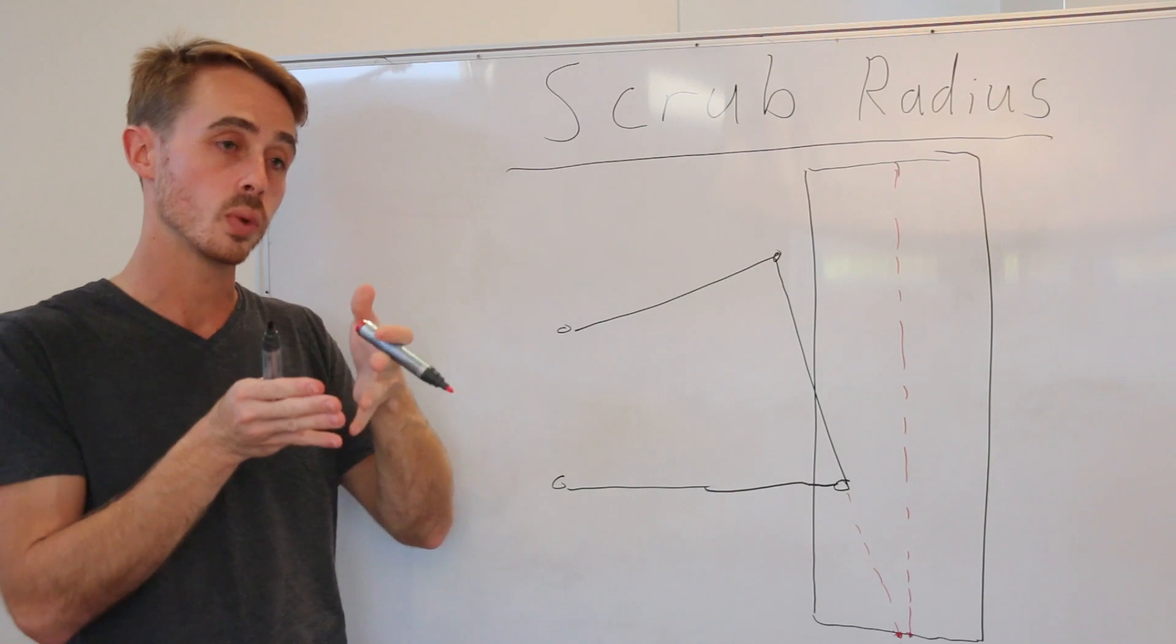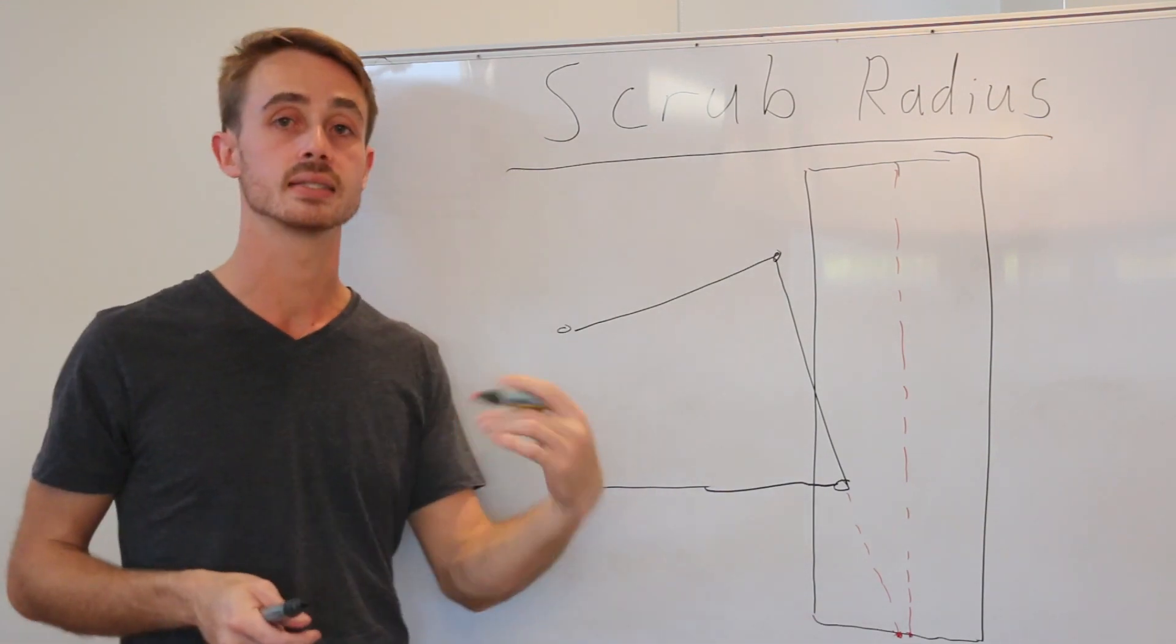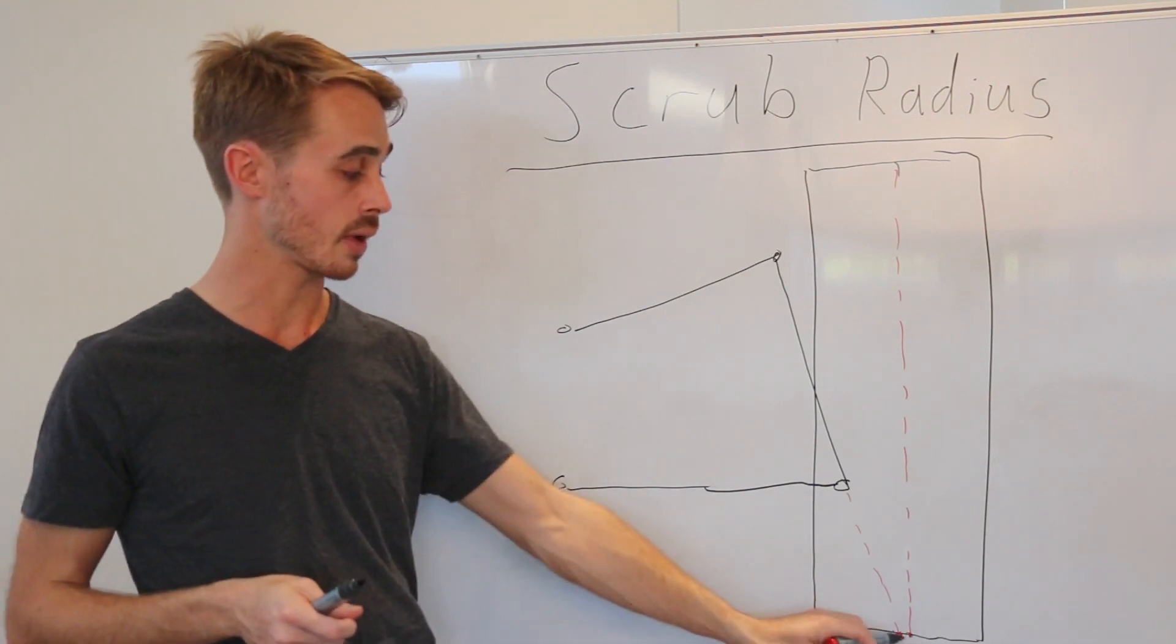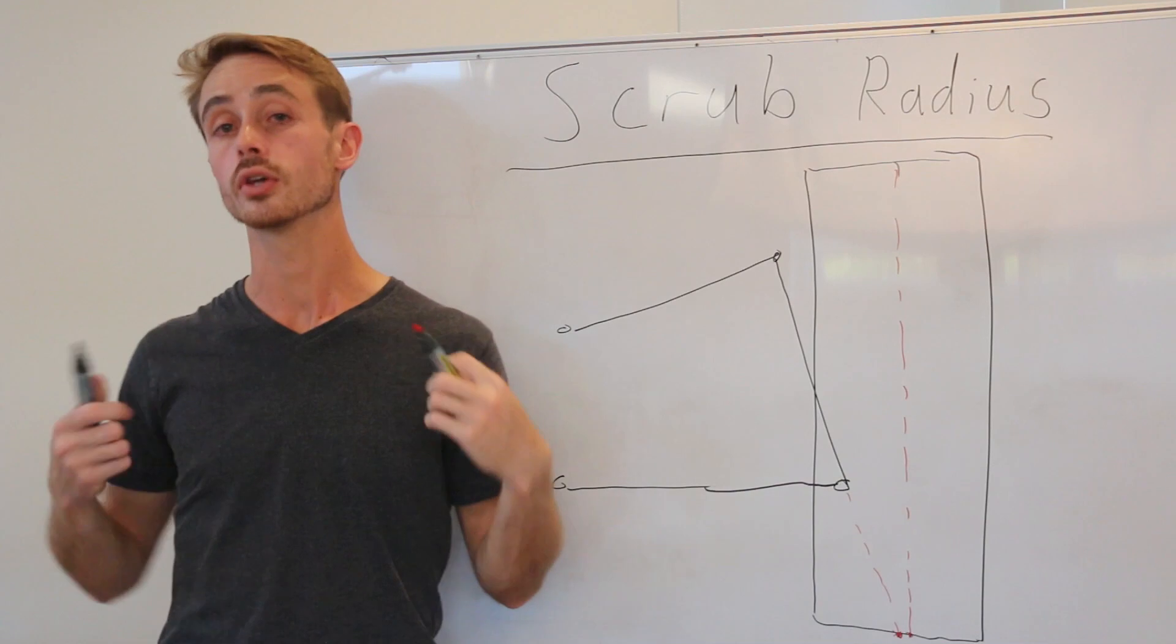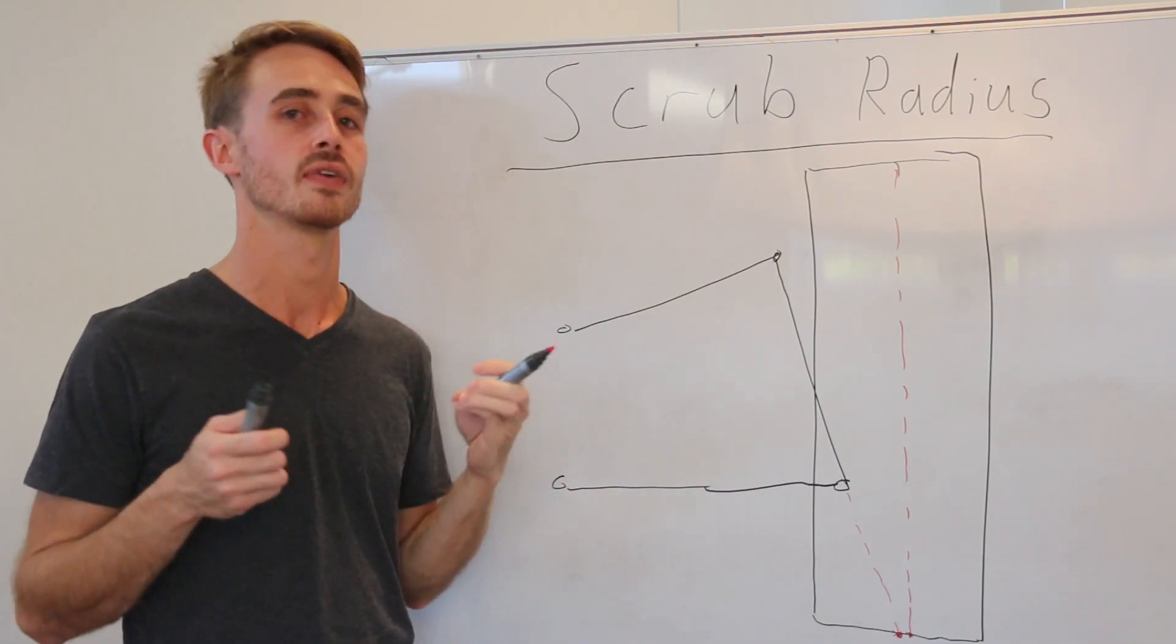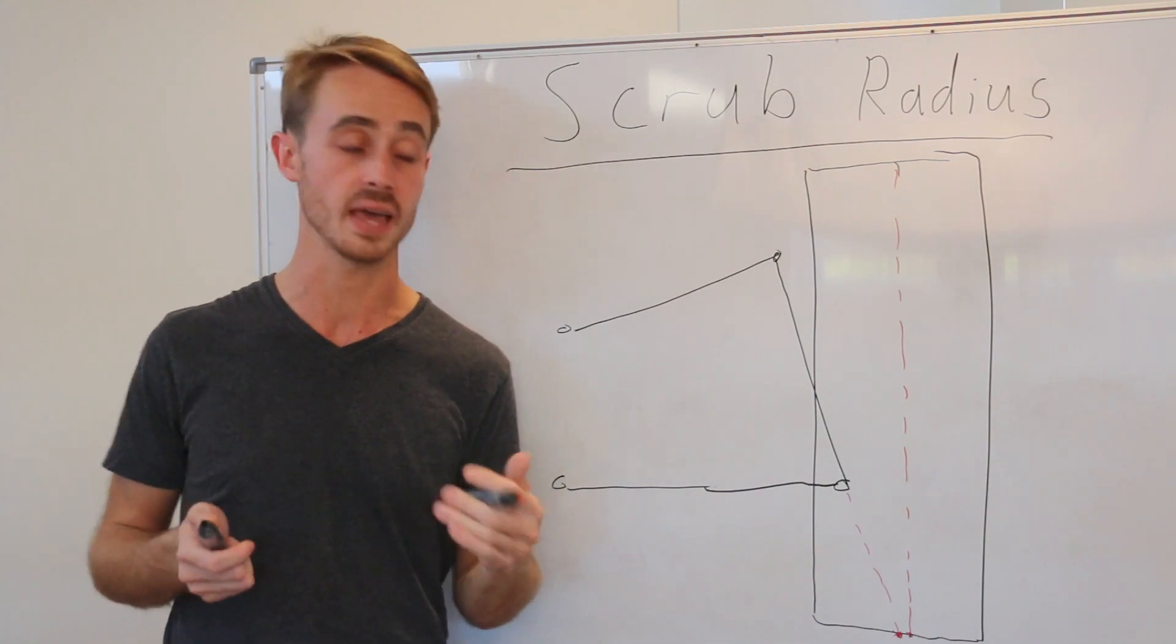And in their case, the wheel is hugely offset from the pivot axis. Now, the scrub radius adds steering weight. You get a lot of steering weight from that scrub radius when you're at standstill. Once you're going more, the scrub radius is far less dominant and you end up getting more caster dominated effects.